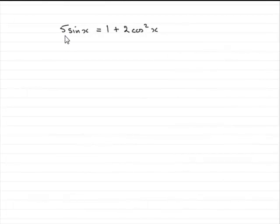Now, in this question, we're given that 5 sine x equals 1 plus 2 cos squared x. We've got to show that we get that quadratic 2 sine squared x plus 5 sine x minus 3 equals 0.